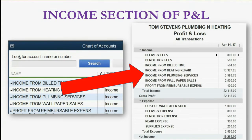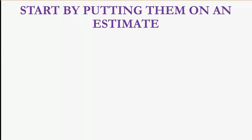If you look at a typical QuickBooks profit and loss report, the income section is on top and the expense section is below. If you want to see each area that money is coming in from, you would create separate income accounts so that those accounts show up at the top of the profit and loss, showing how much money came into each income account to get the total income, and then subtract out the expenses for the net income.